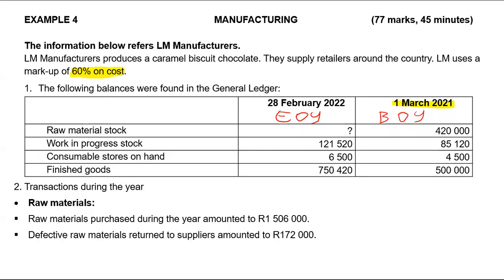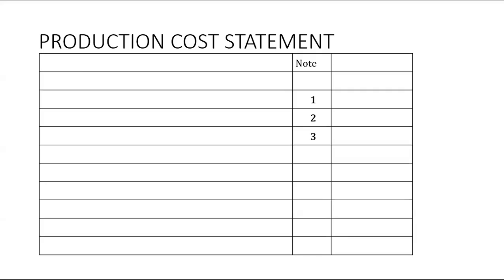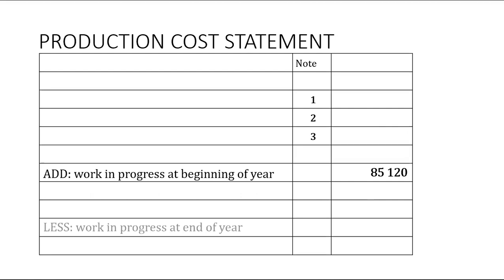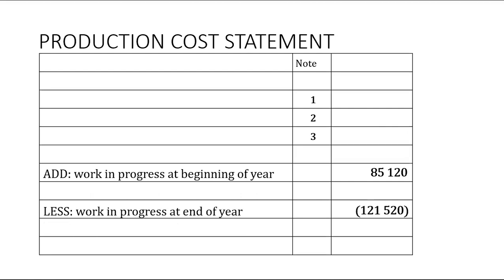Work in progress at the beginning of the year will be $85,120. At the end of the year, work in progress will be $121,520. These will be recorded in the production cost statement. Work in progress at the beginning of the year we simply add — positive, $85,120. Work in progress at the end of the year we subtract — $121,520.